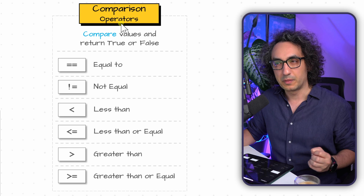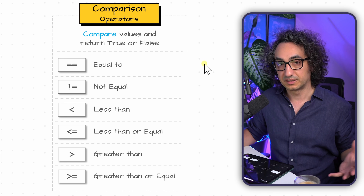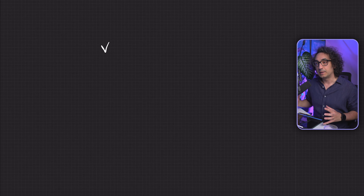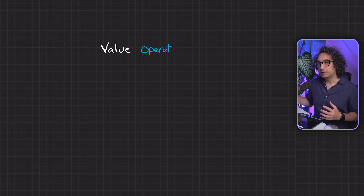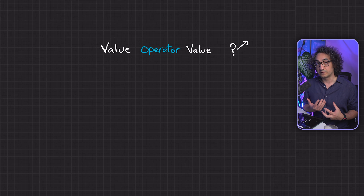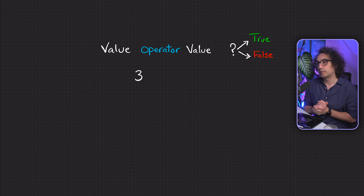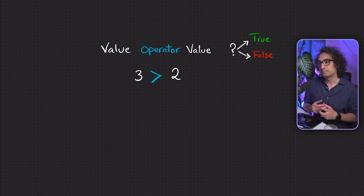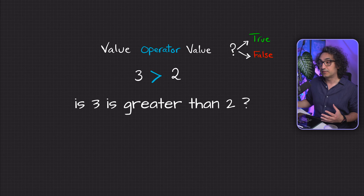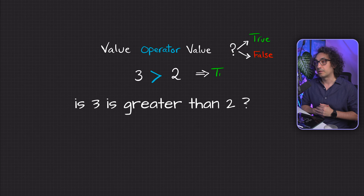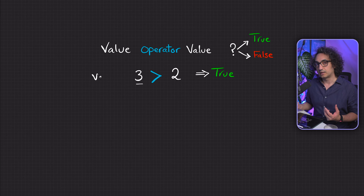How it usually works: we have two values and in between we put the comparison operator. This is like a question, and the result can be either true or false. For example, we have two values, three and two, and if we put the greater than operator between them, we are asking 'is three greater than two?' — Python returns the boolean value true.